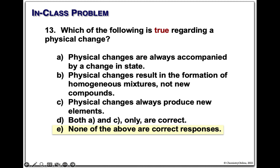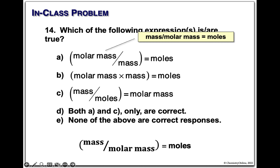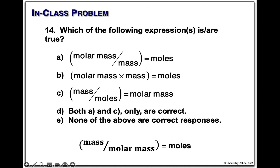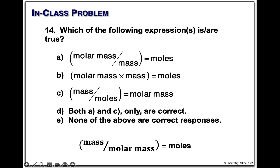On your little card you have formulas written. Mass divided by molar mass is moles. We're dealing with perturbations in this equation. Molar mass divided by mass is moles? No — other way around. Molar mass times mass would be something else. Mass divided by moles is molar mass — simply swap those two. This is our definition of a mole: mass divided by molar mass equals moles.